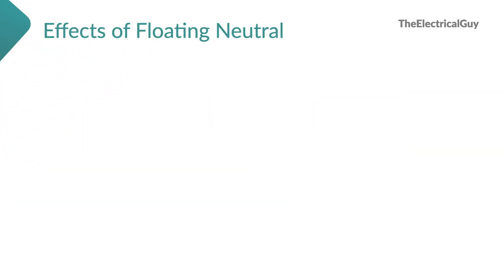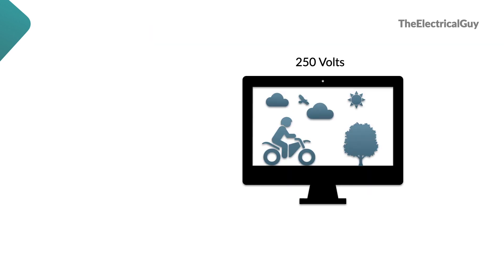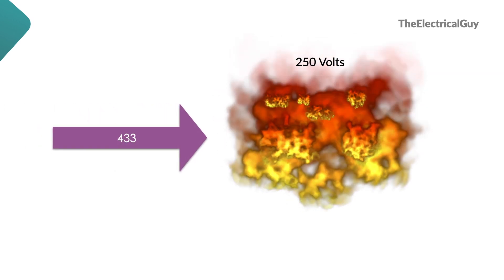Floating neutral can be very dangerous. It causes very high or very low voltage across the load. Load connected phase-to-neutral can experience maximum voltage of phase-to-phase, which in our case is 433V. So if you see here, our appliance or any device connected across phase-to-neutral is designed for 250V. But now it may have to face 433V. Definitely, this high voltage will damage the device.